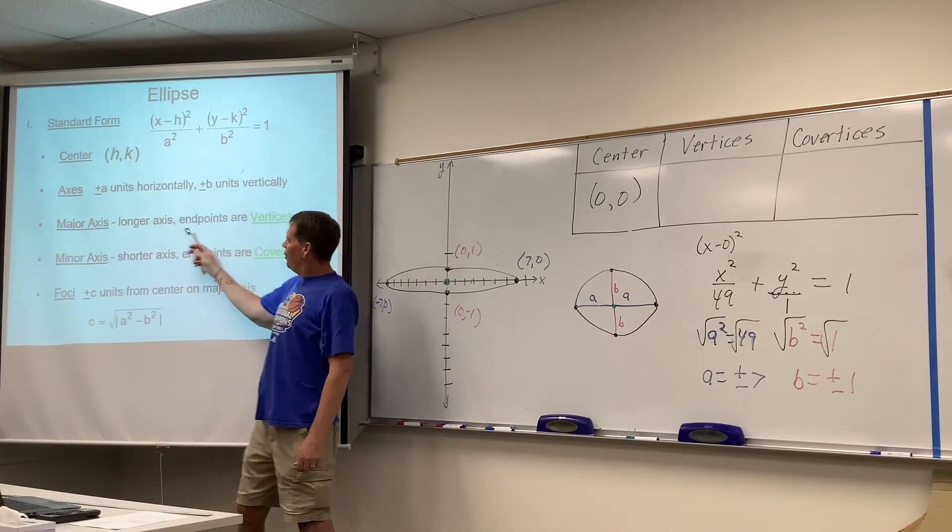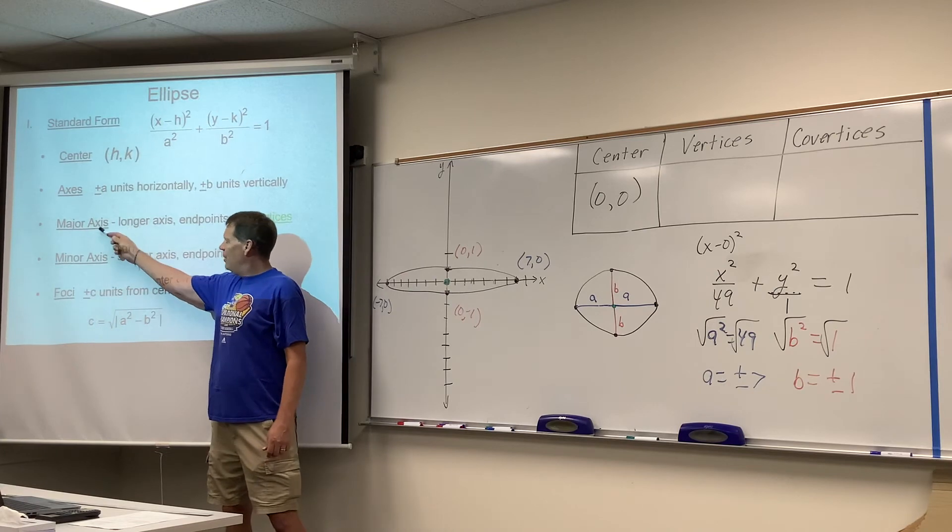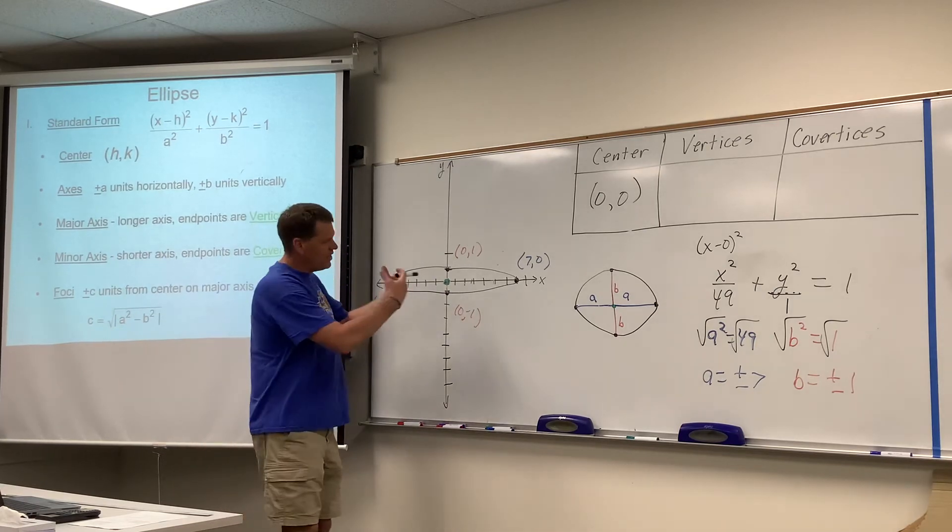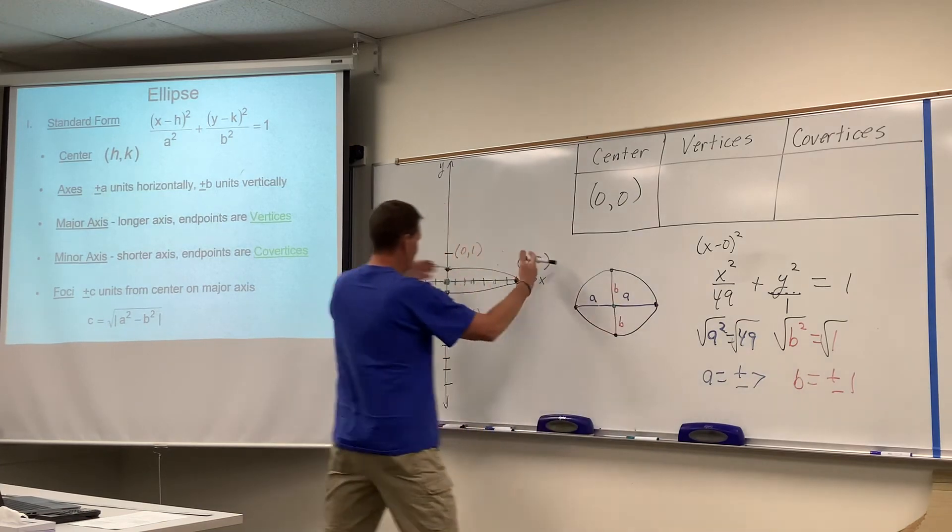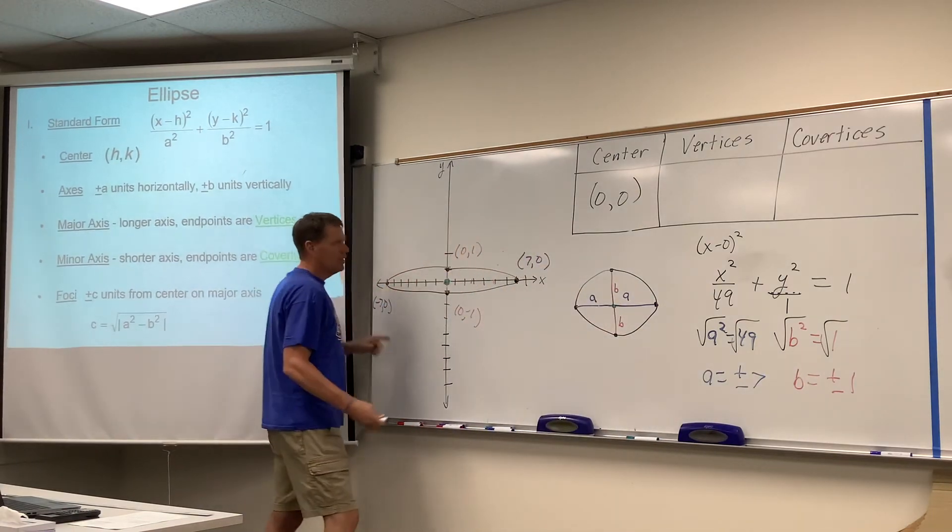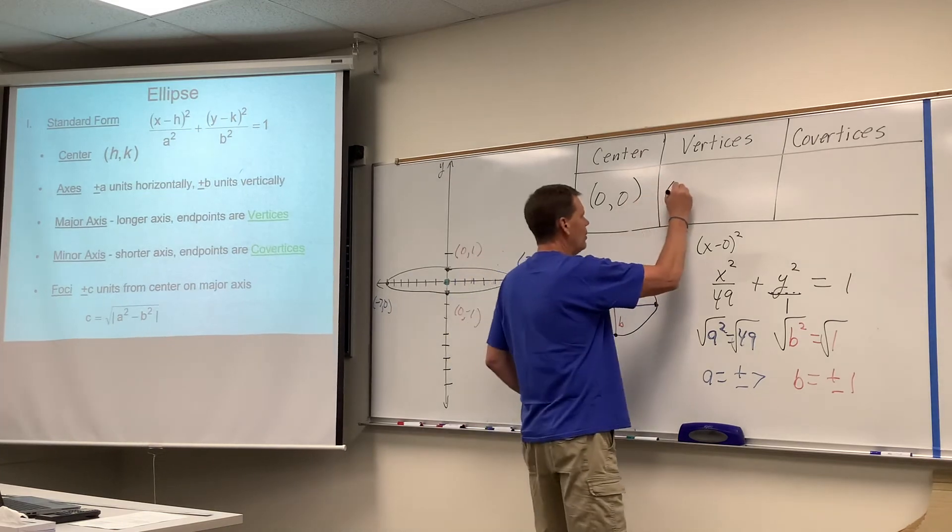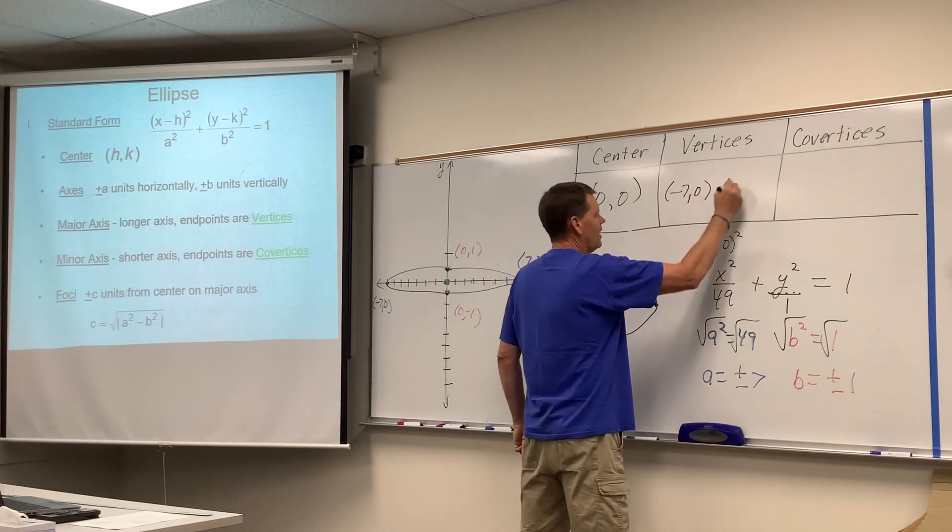Recall that vertices are on the longer of the two axes, the major, and certainly 7 is bigger than 1. So, didn't we travel, wouldn't these ones on the sides be the vertices, negative 7, 0, as well as 7, 0?